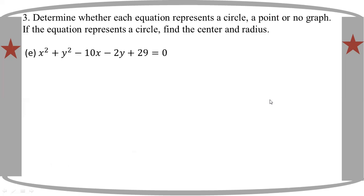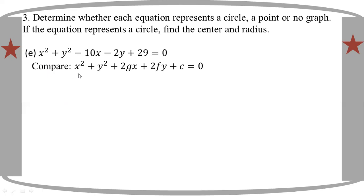This is the standard form. This means that X squared plus Y squared minus 10X minus 2Y plus 29 equals 0. We need to compare it to the general formula: X squared plus Y squared plus 2GX plus 2FY plus C equal to 0.